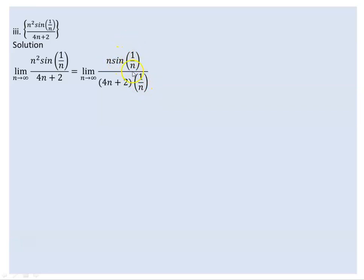So sin(1/n) is equivalent to 1/n for large n. Similarly, the denominator 4n plus 2 behaves like 4n. Applying the limit sin(1/n) over (1/n) gives us 1.